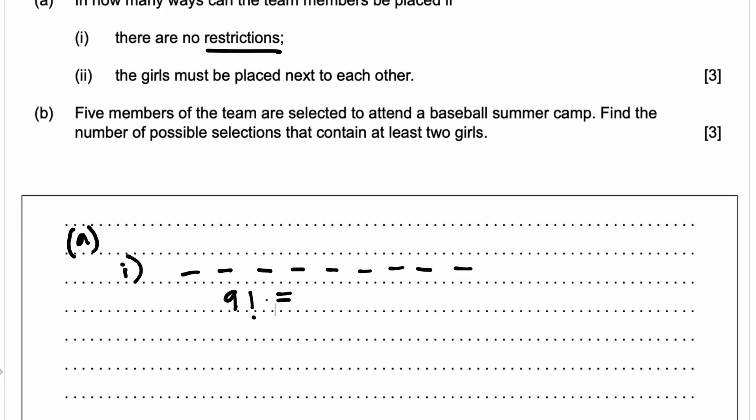nine factorial is equal to 362,880 ways. So that's part one.